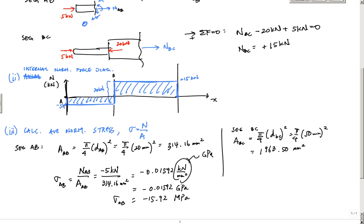And then here, in sigma BC, right here also, NBC divided by ABC, okay? And this would be here, let's see, I won't go through all the nitty-gritty here, but this is gonna come out to 0.00764 GPa in tension, a positive indicating tension, or 7.64 MPa.